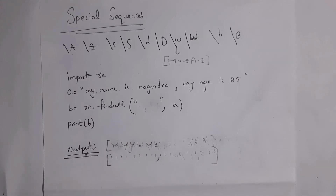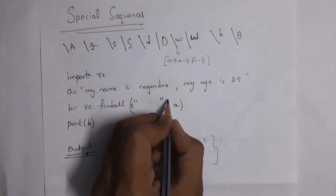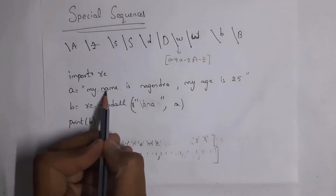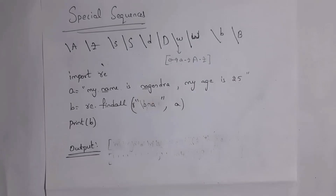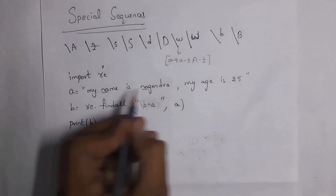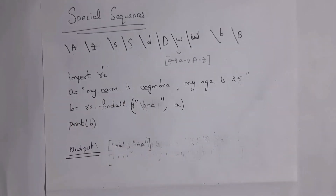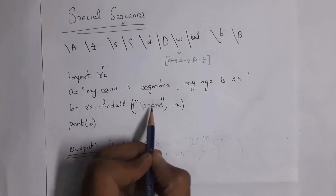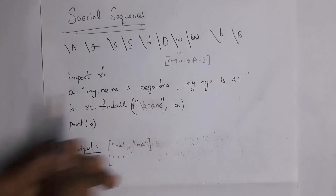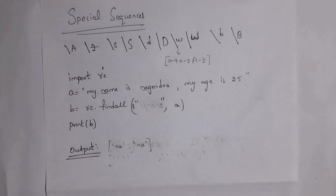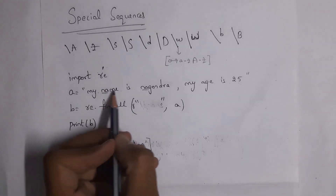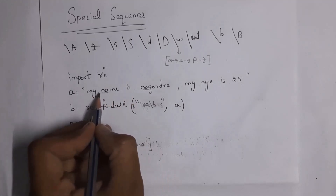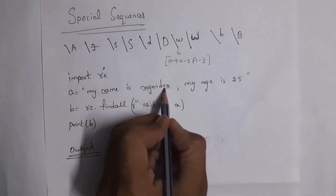Next I'll explain `\b` (backslash small b). Before using `\b`, write `r` before the quotation marks to denote a raw string. Writing `r'\bna'` checks whether any word contains 'na' at the start. 'name' starts with 'na' and 'nagendra' starts with 'na', so the output is `['na', 'na']`. If you write `r'\bname'`, it finds 'name' at the start of a word. You can also place `\b` at the end to search for ending characters — for example, `r'ra\b'` checks if any word ends with 'ra'; 'nagendra' ends with 'ra', so the output is `['ra']`.